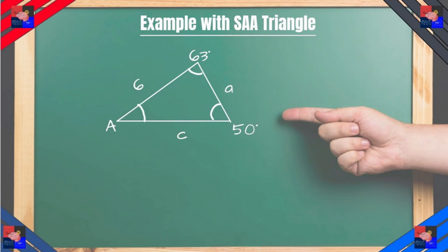Well let's look at a real example. Say a side angle angle triangle. This triangle has A missing, B 50 degrees, C is 63 degrees, and sides C and A are missing and B is 6.